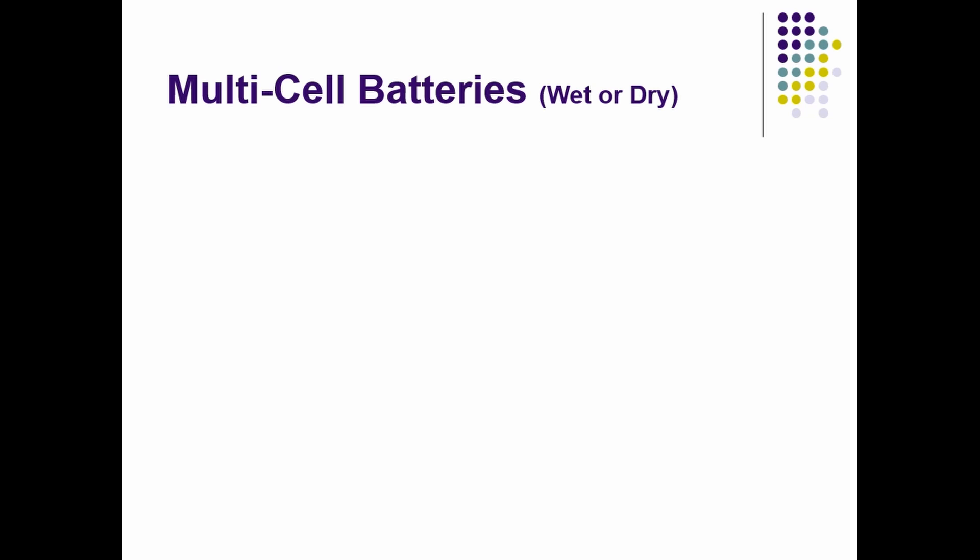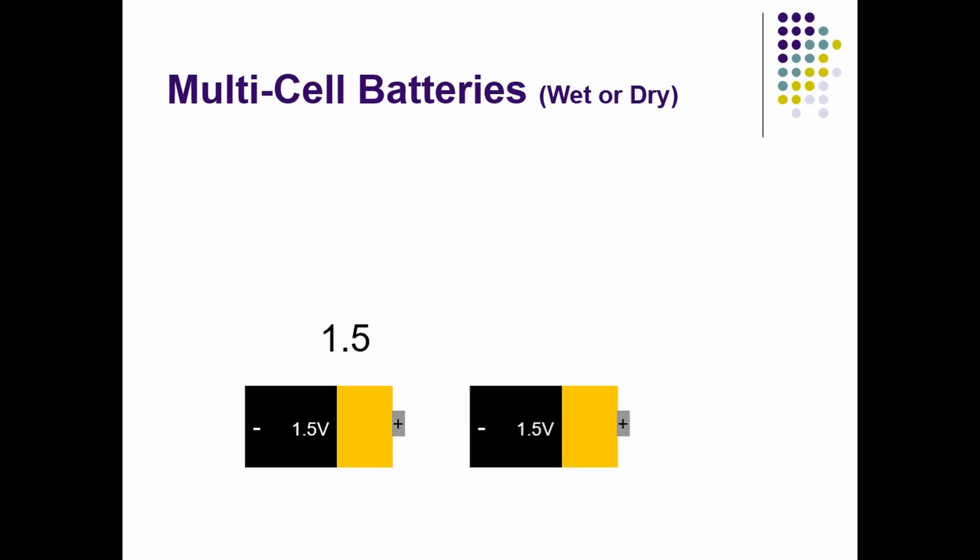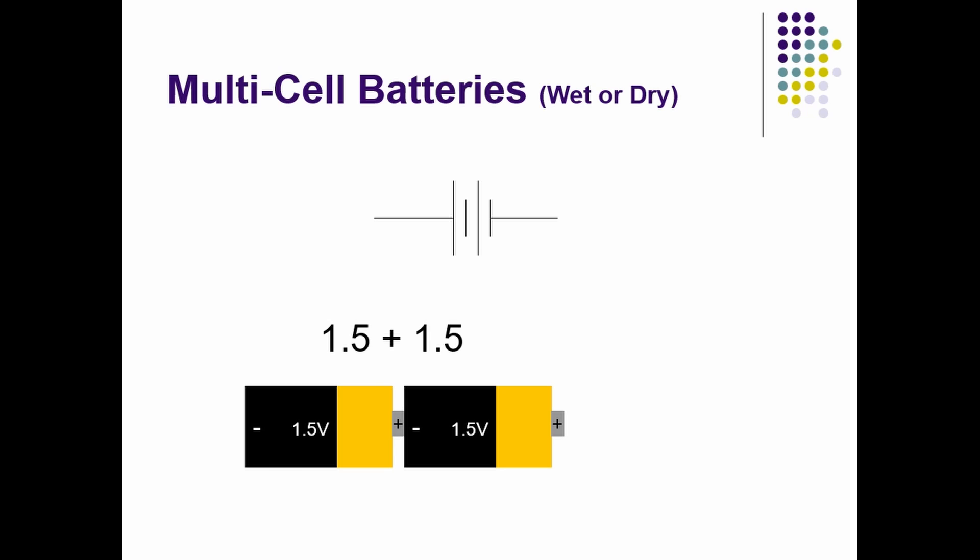Battery cells can be combined to produce higher voltages. For this example, we'll take a single battery cell and combine it with the second cell. Combine the batteries so that the positive terminal of one cell touches the negative terminal of the second cell. When the two batteries are combined in this way, the combination produces 3 volts, the sum of the two cells' voltage.